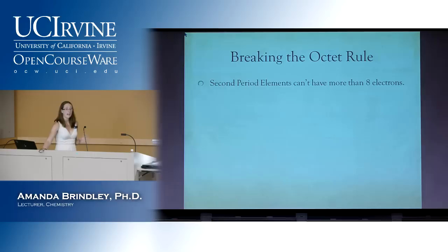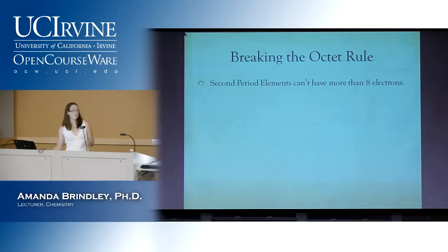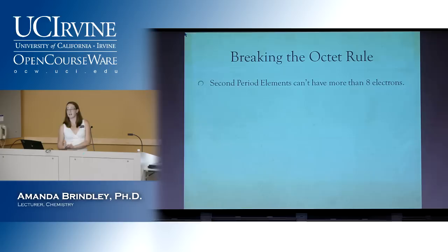So last time we met, we had been talking through Lewis structures that break the octet rules. Just a quick reminder on all the rules we're following: you can't have more than eight electrons in your second period elements, and your first two — hydrogen and helium — can only have two. You're allowed to have less than eight; it happens with things like beryllium and boron. But no more than eight electrons — you can't put five bonds on nitrogen or carbon.